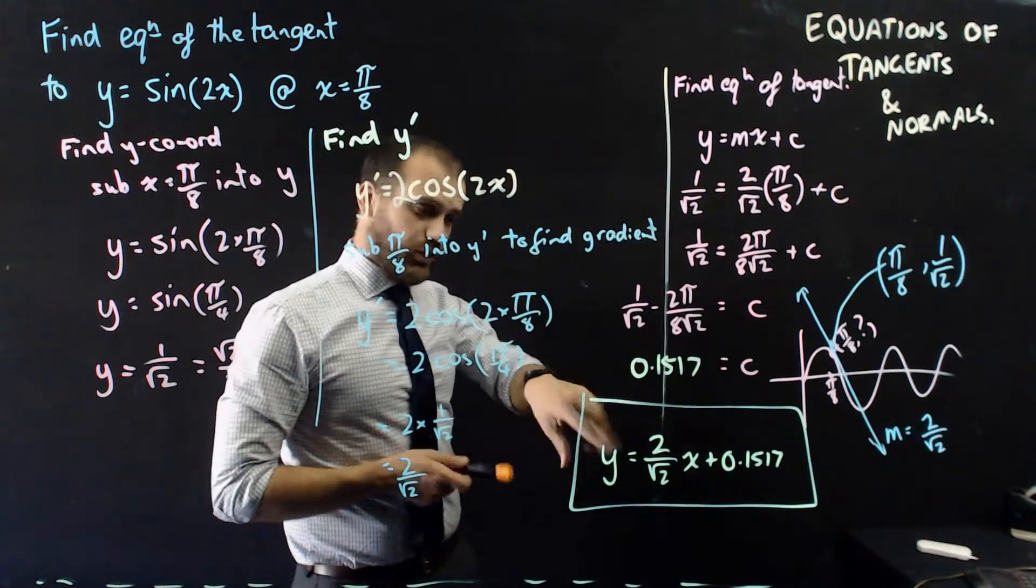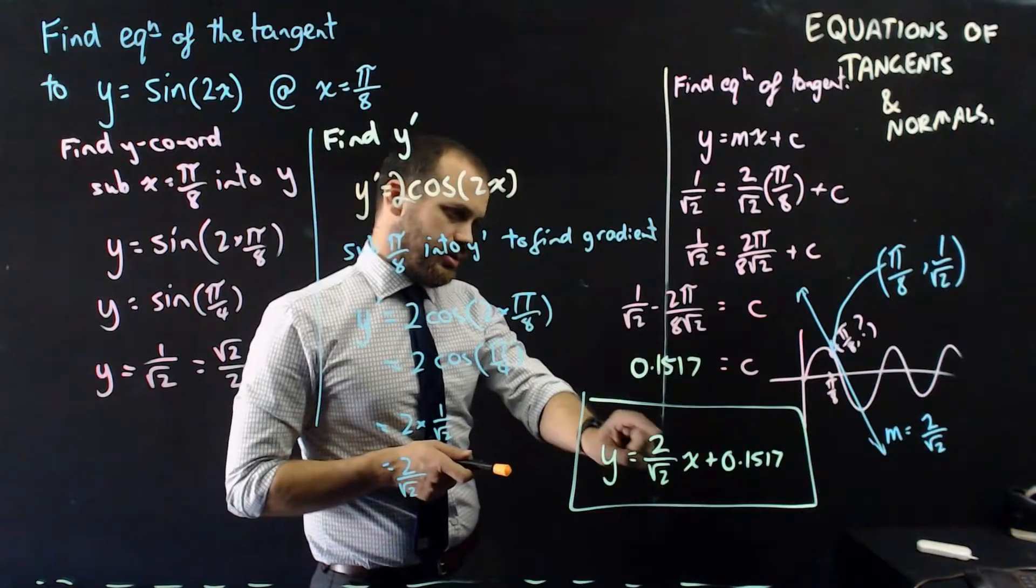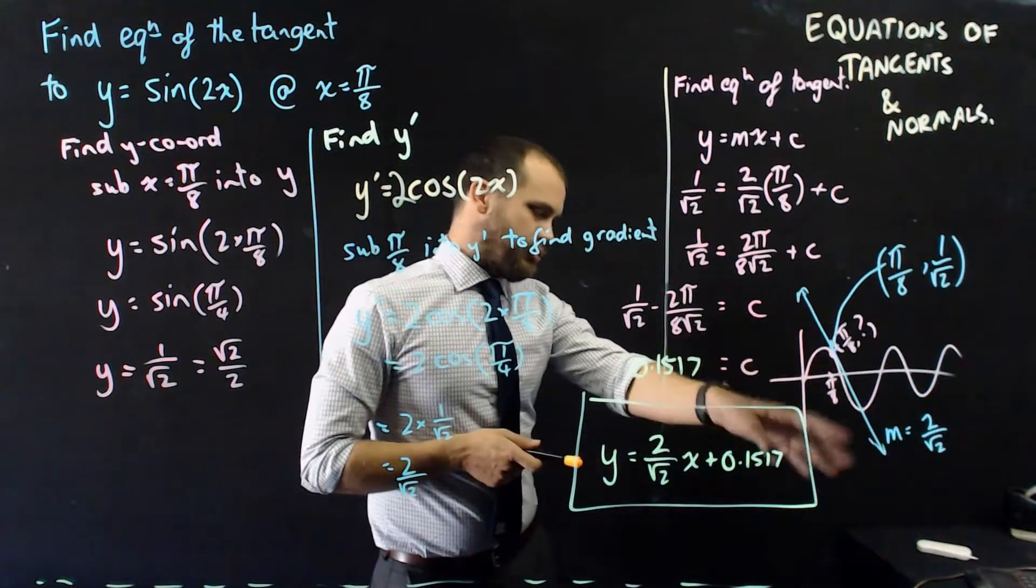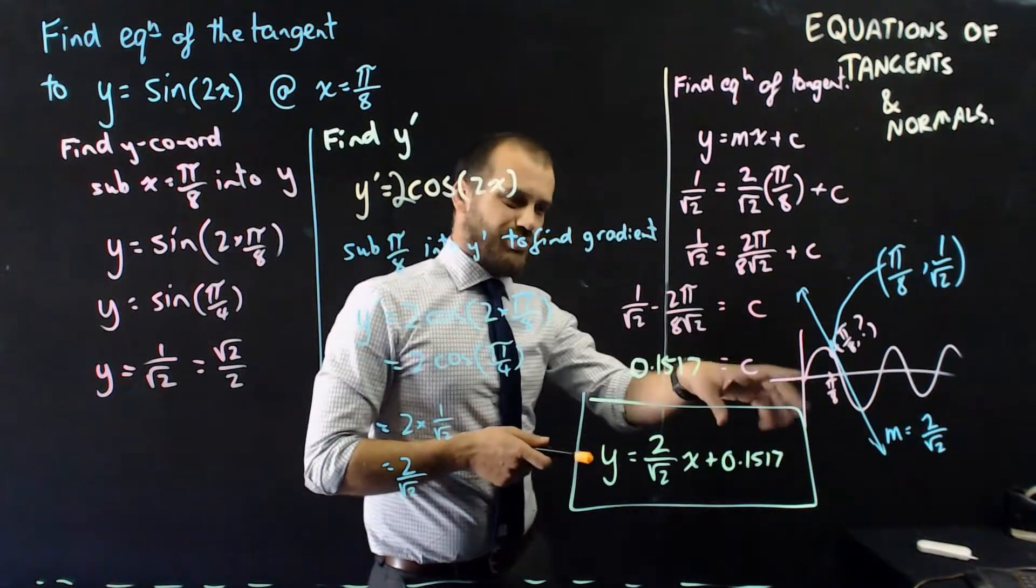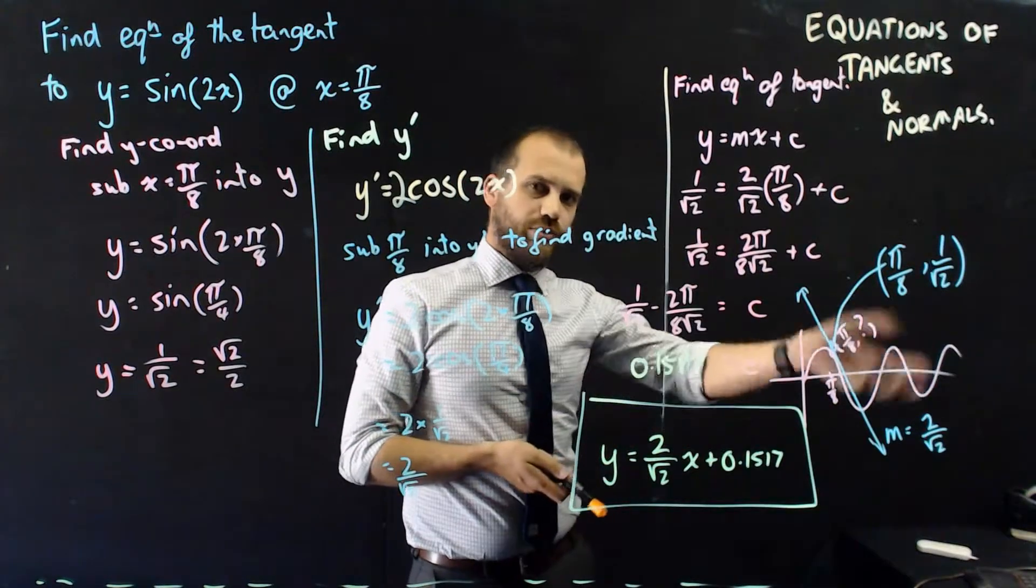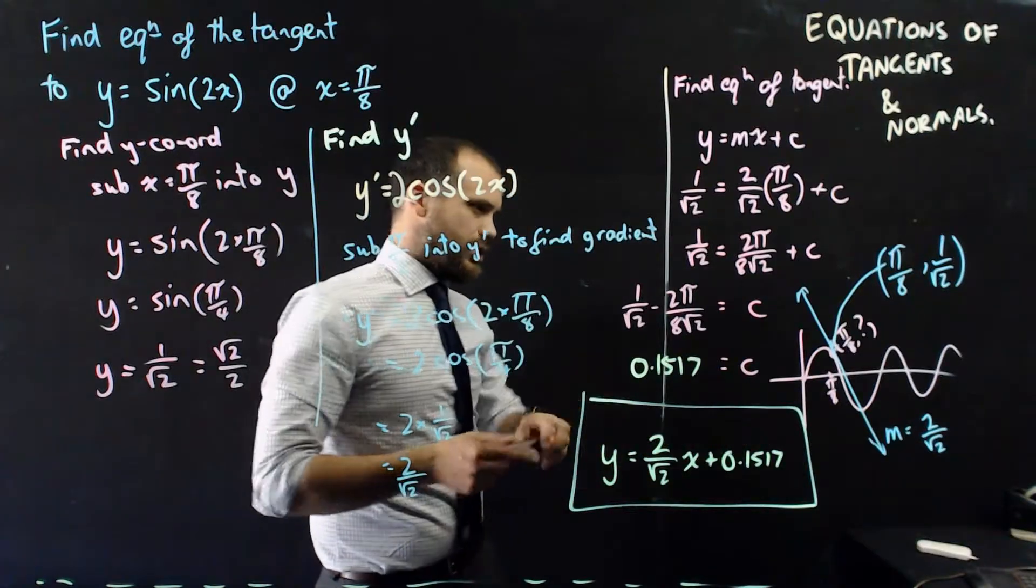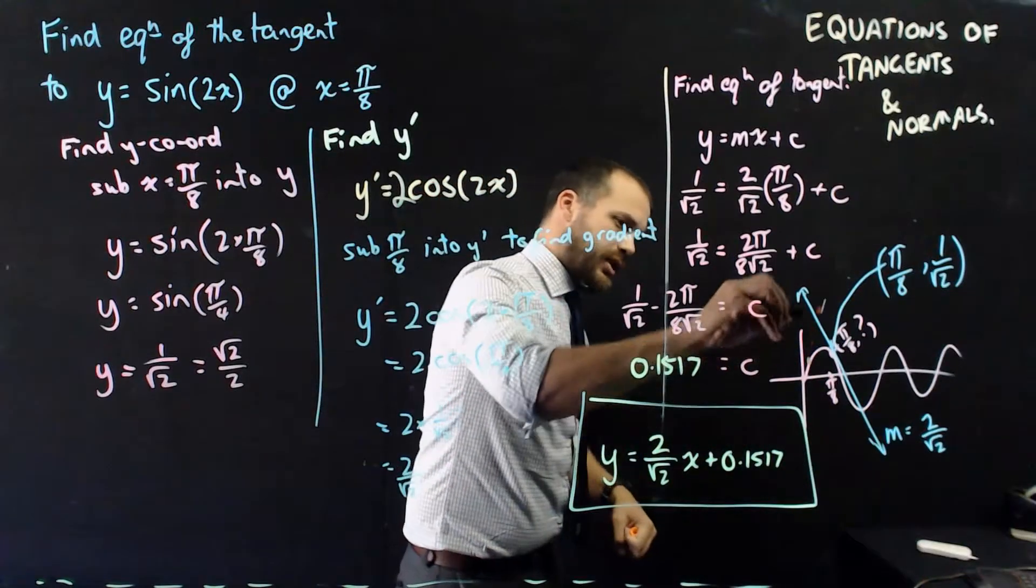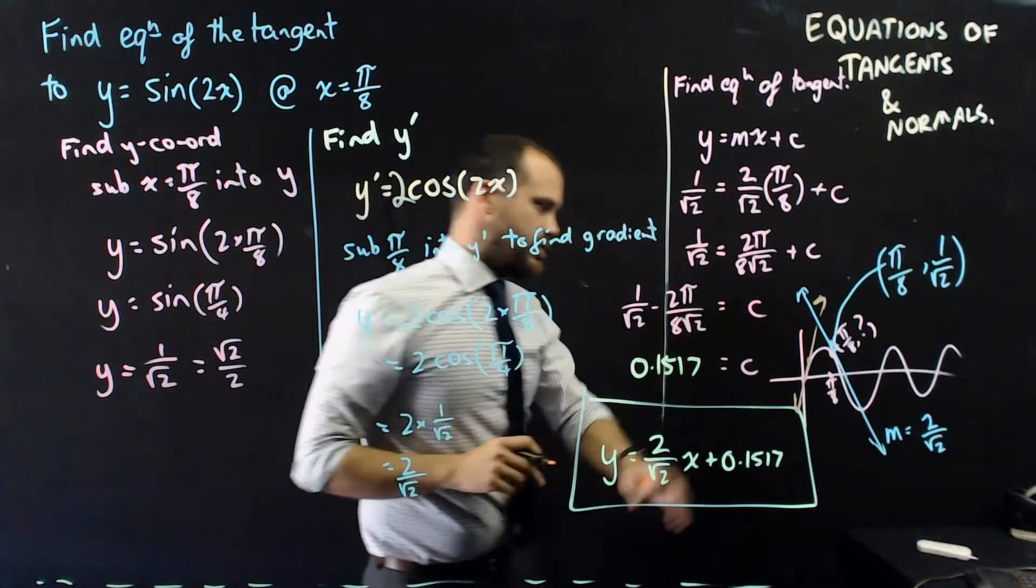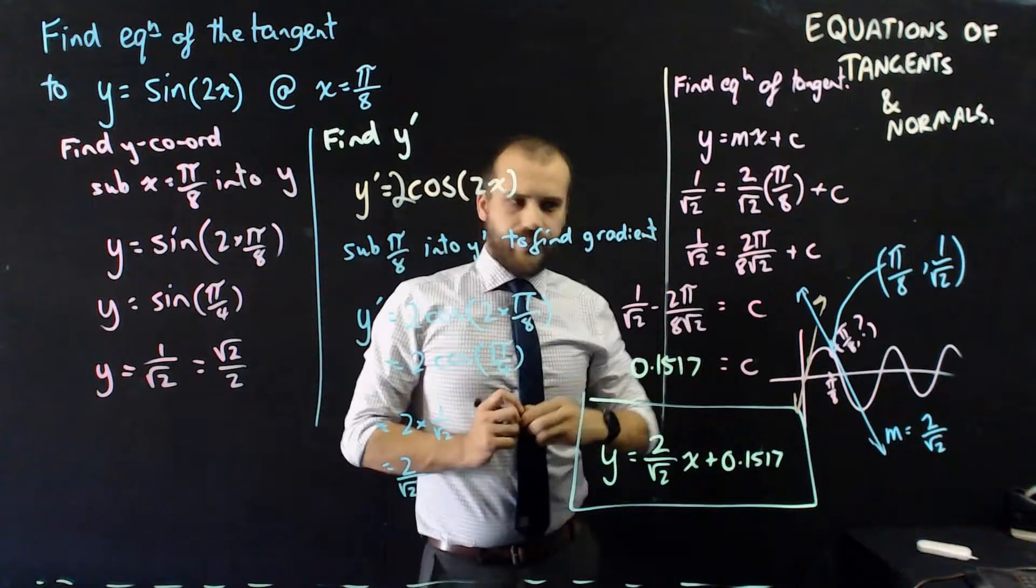Just a small point before I move on here. You'll notice this equation here has a positive gradient. But my little drawing here had a negative gradient. That's just because I had no idea where the points were. That was just sort of a visual reference for me. So now that I know a little bit more about what that equation looks like, that's probably more like what the tangent actually looks like heading in an upwards direction.